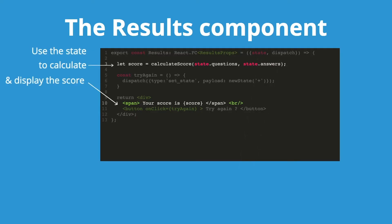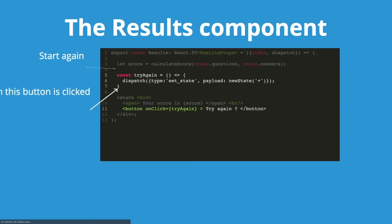We display the score inside the HTML return. We also have a button with an onClick listener, and this click listener calls the try again function. In the try again function, we dispatch a set state action which sets a new state and initializes it with a random state — this is how we can restart the quiz.